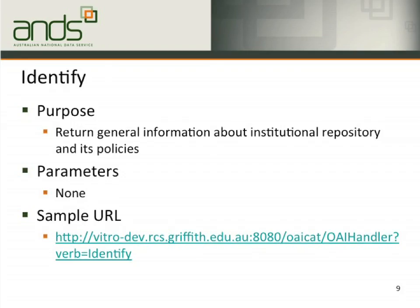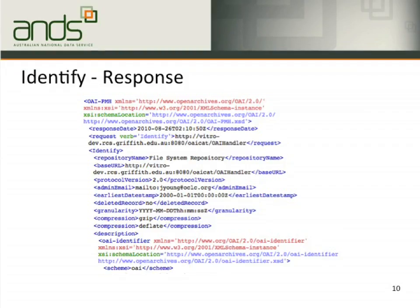These are the six predefined verbs in OAI-PMH. The first one is Identify — it returns general information about the IR and its related policies. Using Griffith's metadata hub project as an example, the command uses verb=Identify. The response shows the repository name, the base URL — which is very important in OAI-PMH — the protocol version 2.0, and contact information if you have any problems.